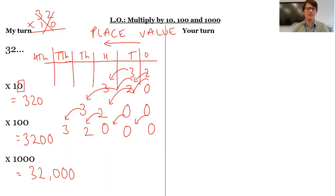So when I times by 10, I move one column, times by 100, two columns, 10 times 10, so two columns, and 1,000, I'm going to move three columns.